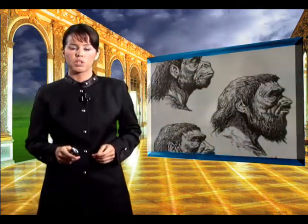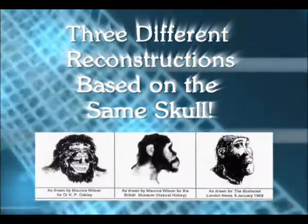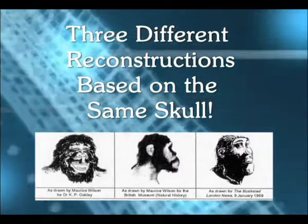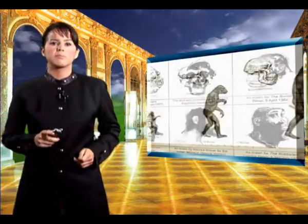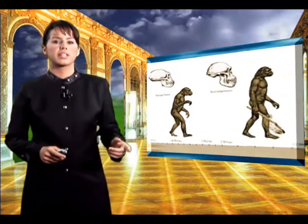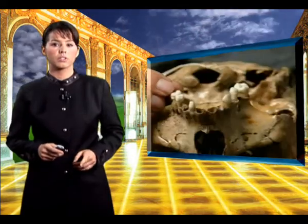As a matter of fact, evolutionists invent such preposterous stories that they even ascribe different species to the same skull. For example, the three different reconstructed drawings made for the fossil named Australopithecus robustus are a famous example of such forgery. Here we see three different reconstructions based on the same skull. The biased interpretation of fossils and outright fabrication of many imaginary reconstructions are an indication of how frequently evolutionists have recourse to tricks.